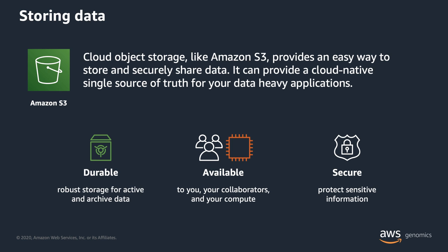Let's start with data storage. There are three aspects of storage to consider. First, durability — a robust and accurate storage for both your active and archived data. Second, availability — you want your data to be easily accessible to you, your collaborators, and the compute resources that will operate on it. And finally, controlled accessibility or security. Genomics data is arguably the most sensitive type of data — it's a person's biological source code. For these reasons, cloud object storage like Amazon S3 provides the easiest way to store with 11 nines of durability and securely share data, serving as a cloud-native single source of truth.